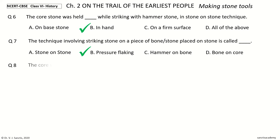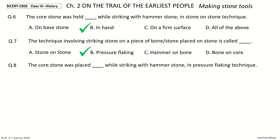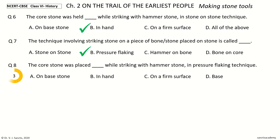Question 8: The core stone was placed dash while striking with the hammer stone in the pressure flaking technique. The options are: on base stone, in hand, on a firm surface, base. And the answer is on a firm surface.